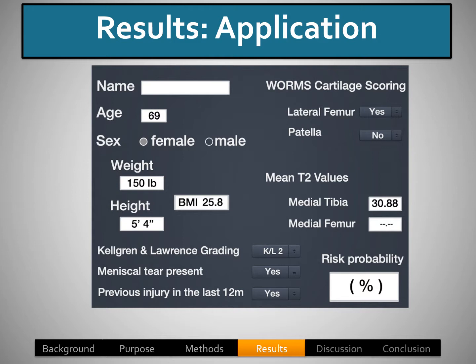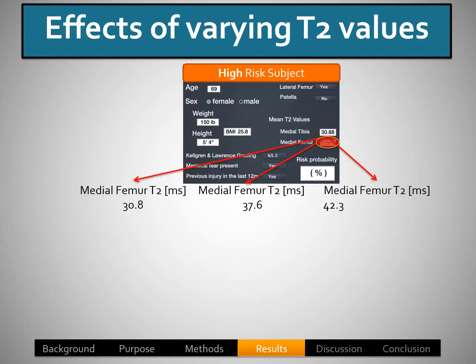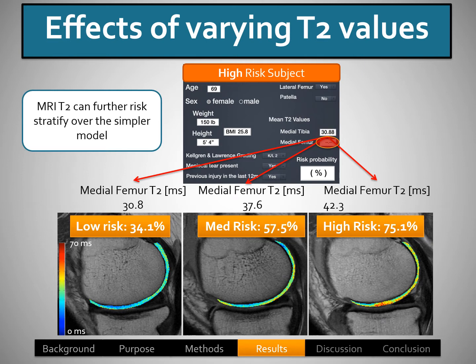For an application, what might this look like? Subjects could come in and fill out a questionnaire, indicating whether they have a WORM tear in the lateral femur or patella, or a meniscal tear, and they could get a risk score. If we look at the effects of varying T2 values, a low medial T2 value of 30.8 versus a high medial femur T2 value of 42.3 shows that changing the T2 value changes the risk. The subject with a low T2 value has very low risk, and the subject with a high T2 value has high risk. So MRI can further stratify risk over a simpler model.